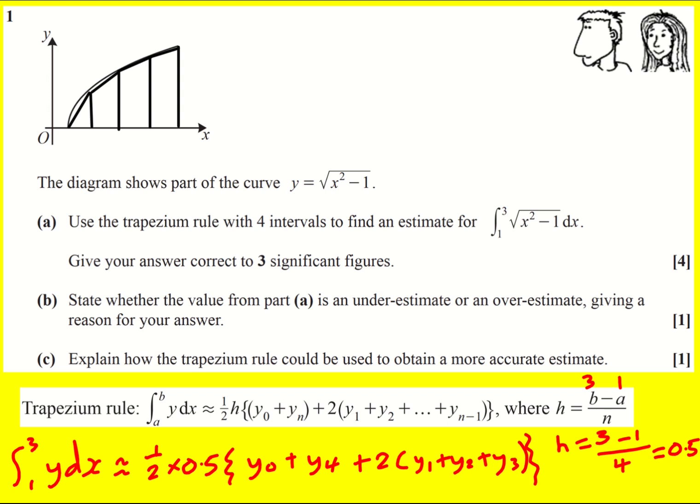So we need to focus on now creating a table of values x against y. The first point is 1, so this is when x is 1, then 1.5 to 2.5, 3.